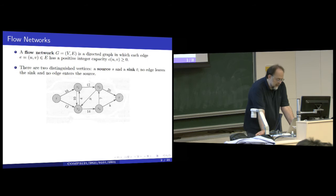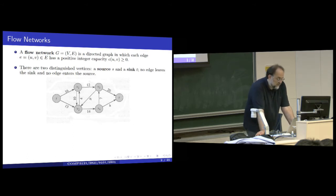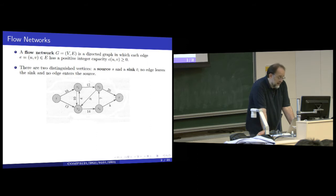Another example that doesn't involve pirating: assume you are running a shipping company. S is your warehouse and T is your destination. You can use trucks from S to city V1, then railway from V1 to a port V3, then ship to T. But all of these channels have limited capacity — there is a certain amount you can put on a single track and you have a limited number of tracks. Or imagine S is a source of oil, edges are pipelines, and your refinery is at T. The question is how much you should pump through each pipe to achieve maximal throughput.